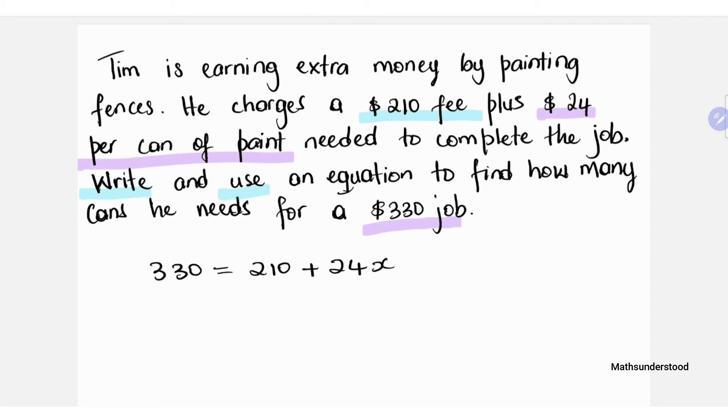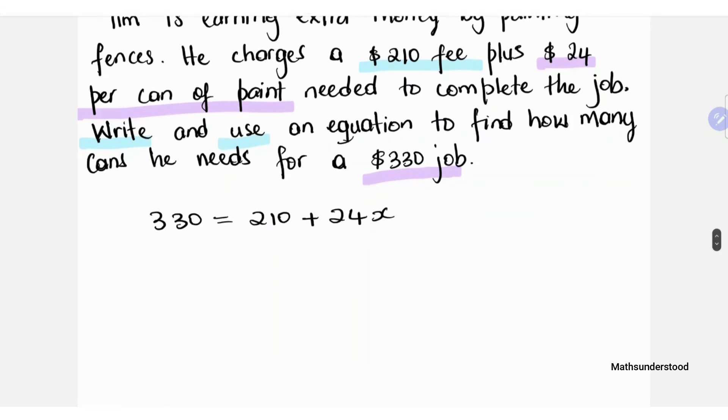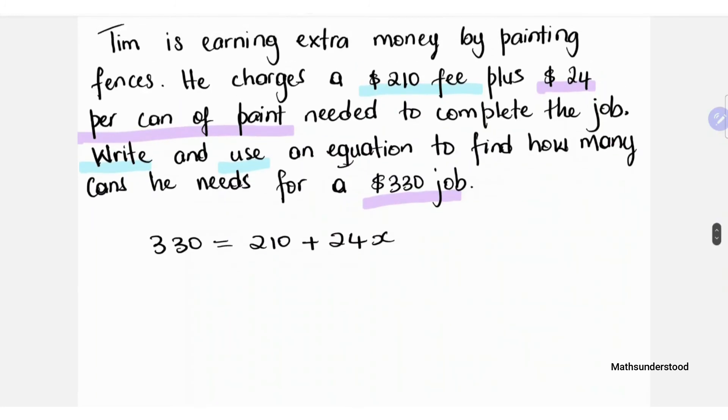Now that we have our equation set up, we will just go ahead and solve for X. In solving for X, the first thing we're removing is this 210, so we'll remove it by subtracting it from both sides of the equation. Once we've done that, we're left with 24X being equal to 120.